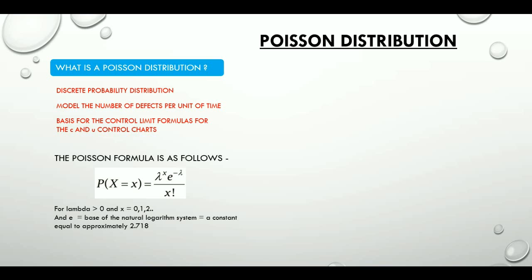For a Poisson distribution, both mean and variance are equal to lambda. Let's look at the requirements for a Poisson distribution now.